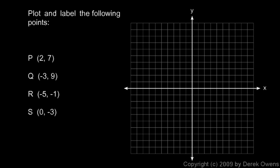Here we're told to plot and label the following points. Each point is given a name as a letter, and it's very common to name points using capital letters like P, Q, R, and S in this case. Point P is the point 2, 7. So from the origin we'll go to the right 2, and from the origin we'll go up 7: 1, 2, 3, 4, 5, 6, 7. That puts it to this point, which corresponds to an x value of 2 and a y value of 7. We label it with a little P next to it to indicate that that point is point P.